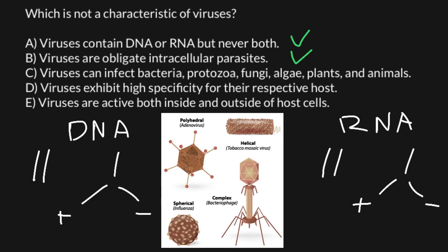Answer C: viruses can infect bacteria, protozoa, fungi, algae, plants, and animals — this is also correct. Viruses can infect any type of organism on our planet. Answer D: viruses exhibit high specificity for their respective host — and this is very true; we generally cannot get viruses from plants or other animals, with very few exceptions. That leaves Answer E: viruses are active both inside and outside of the host cells — and this is not true, because it contradicts Answer B. Viruses are obligate intracellular parasites, so this is our answer today.